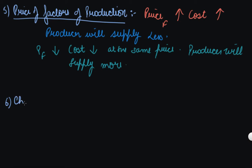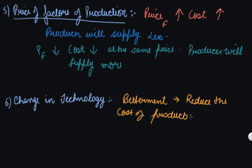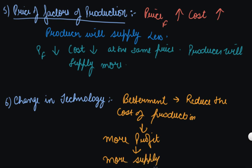The sixth determinant is change in technology. Change in technology also affects the supply of a commodity. Improvement in the technique of production reduces cost of production; consequently, more of the commodity is supplied at the existing prices. Better technology reduces cost of production, which ultimately leads to more profit and more supply.